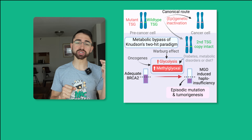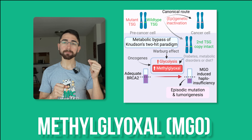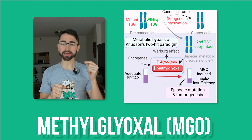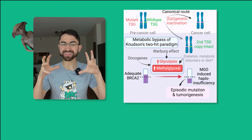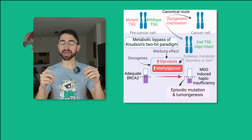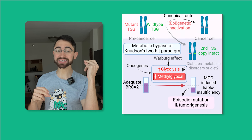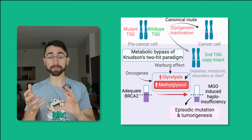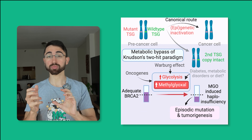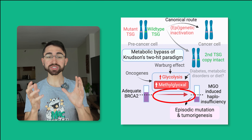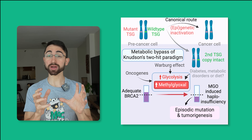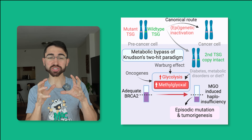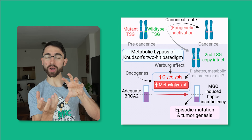But scientists just discovered how a metabolite, methylglyoxal — abbreviated MGO in the paper — can operate like the evil Dobby and episodically disable BRCA2 without actually breaking the second copy of the tumor suppressor, and thereby bypass Knudsen's two-hit paradigm and promote cancer, but in a kind of metabolically surreptitious way.